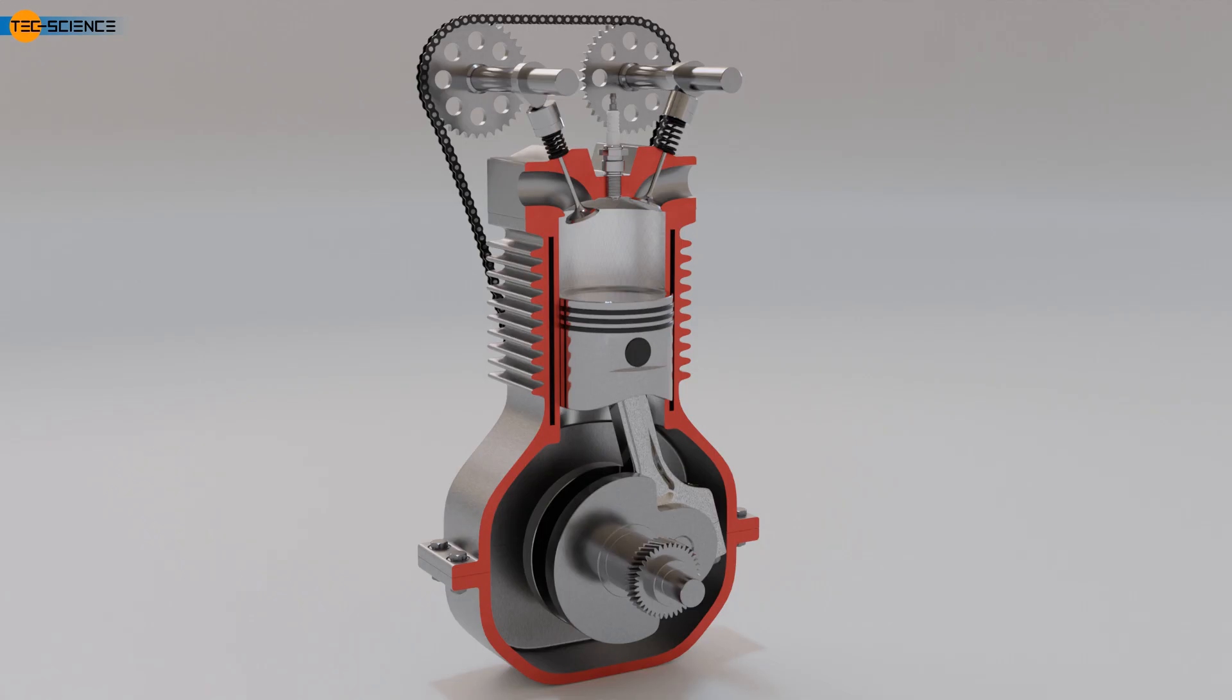It mainly consists of an engine housing with cooling fins, the interior of which forms the shape of a cylinder. Inside this cylinder, a piston slides, which is connected to the crankshaft via the connecting rod.